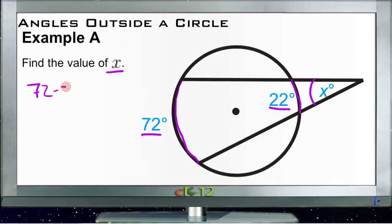So we take 72 minus 22 and that gives us 50 degrees as our difference. Then we divide that difference by 2 and we get 25 degrees. So that 25 degree measure represents the degree measure of the angle that creates those two arcs. Pretty straightforward.